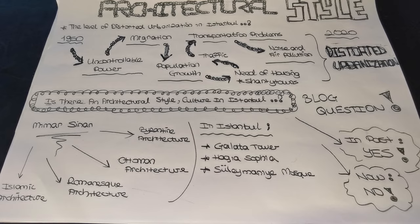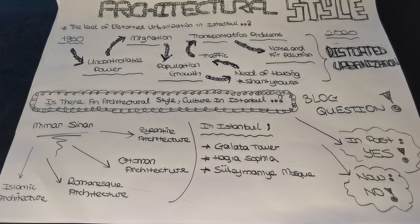These structures were designed by very important architects — for example, Mimar Sinan. If we look at the history of these buildings in general, they were designed considering Byzantine architecture, Islamic architecture, and Romanesque architecture. There is indeed an architectural culture and style. However, with time, the development of technology, rapid population growth, and the need for housing, the old architectural style of Istanbul has not been addressed. With developing technology, buildings in the style of modern architecture started to be designed. Unfortunately, today no work is done to preserve the historical, cultural, and architectural style of Istanbul.